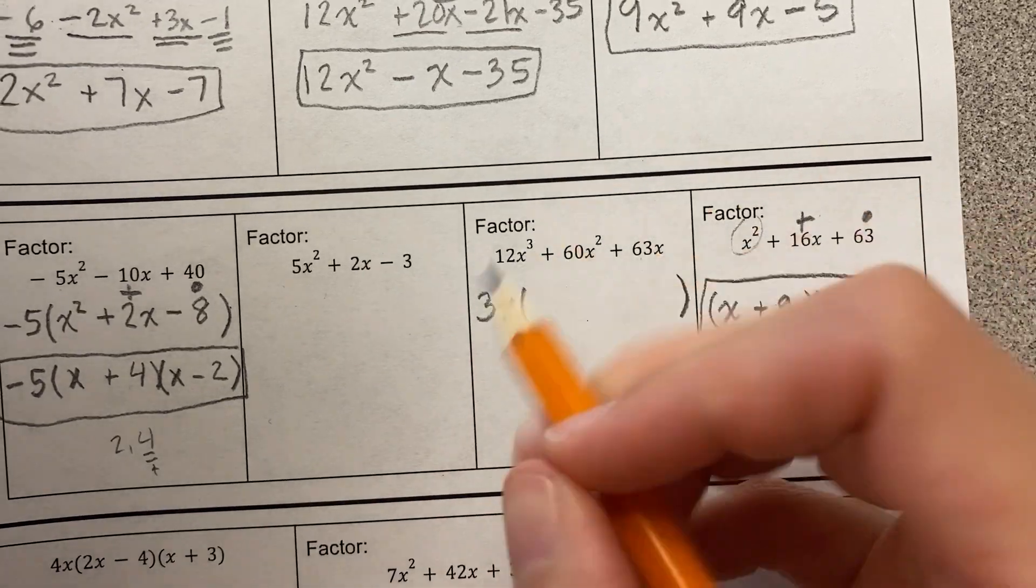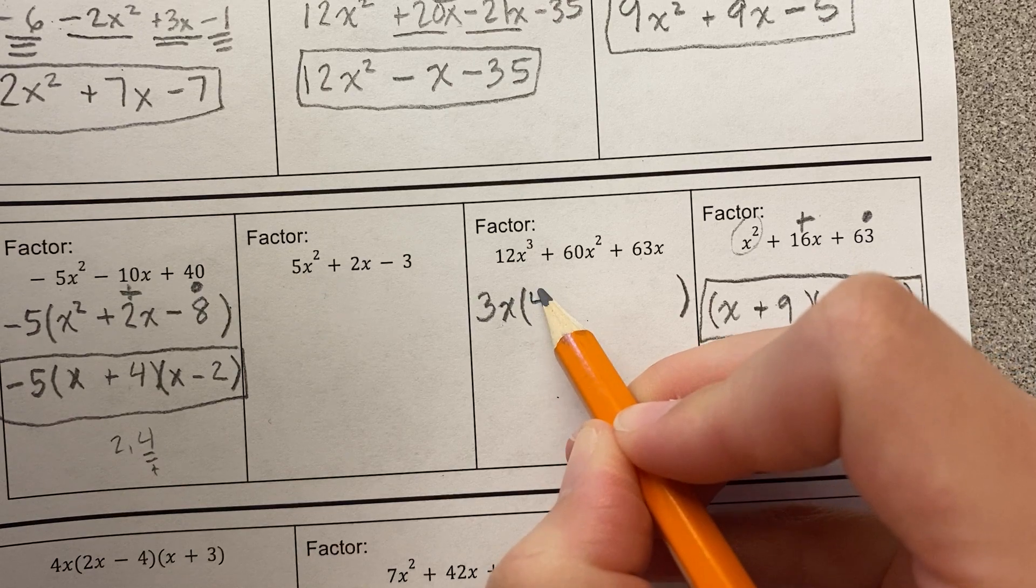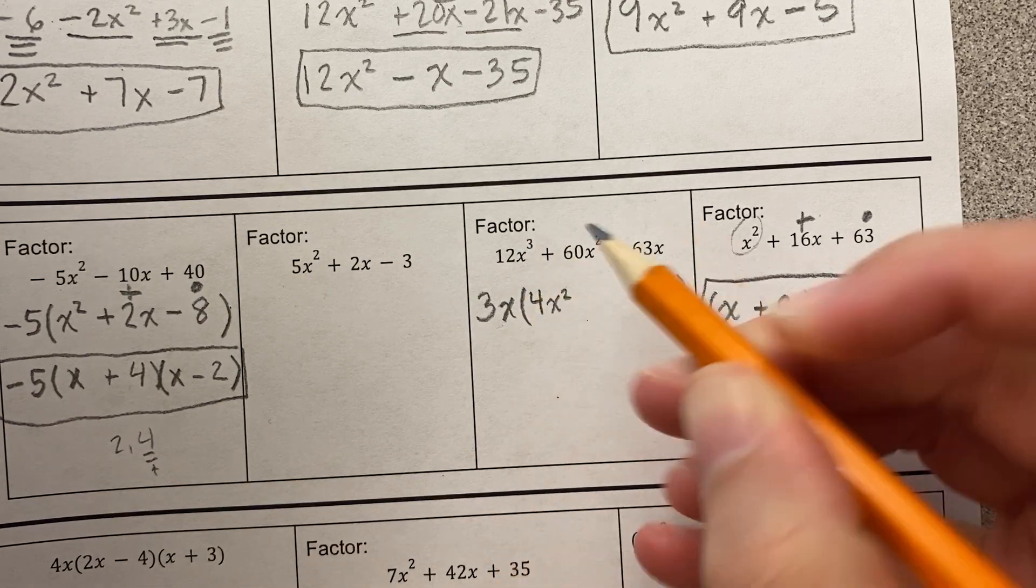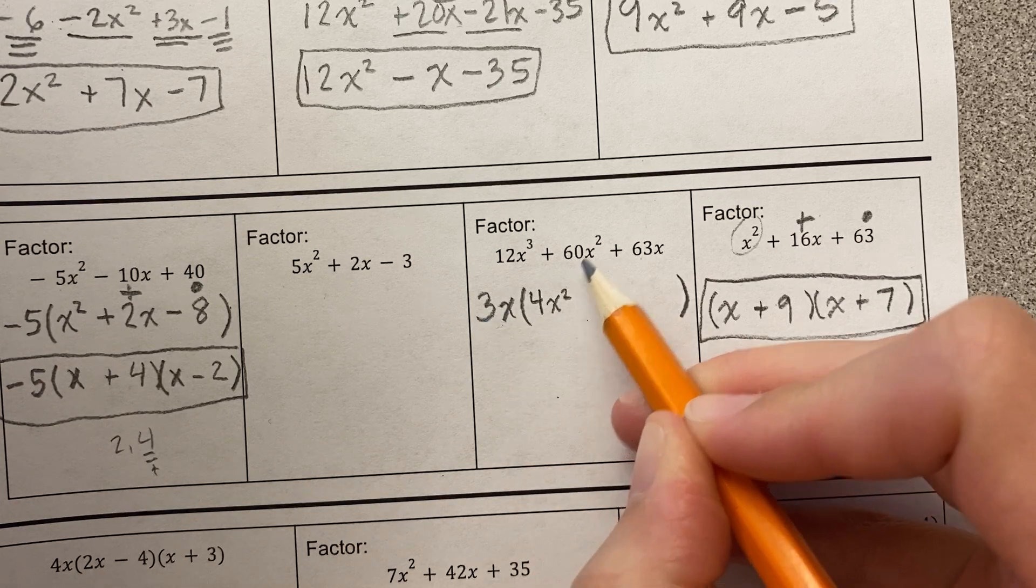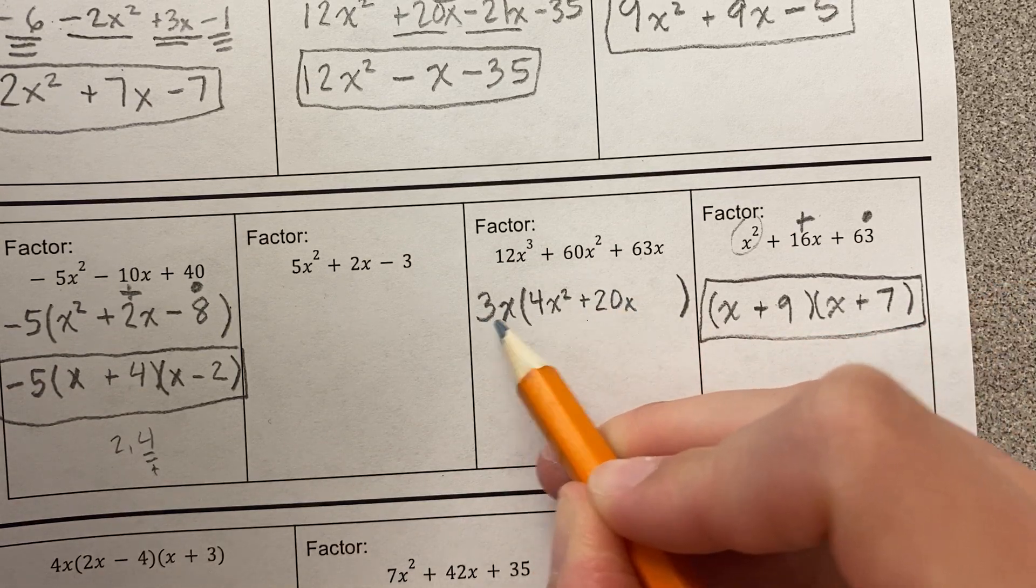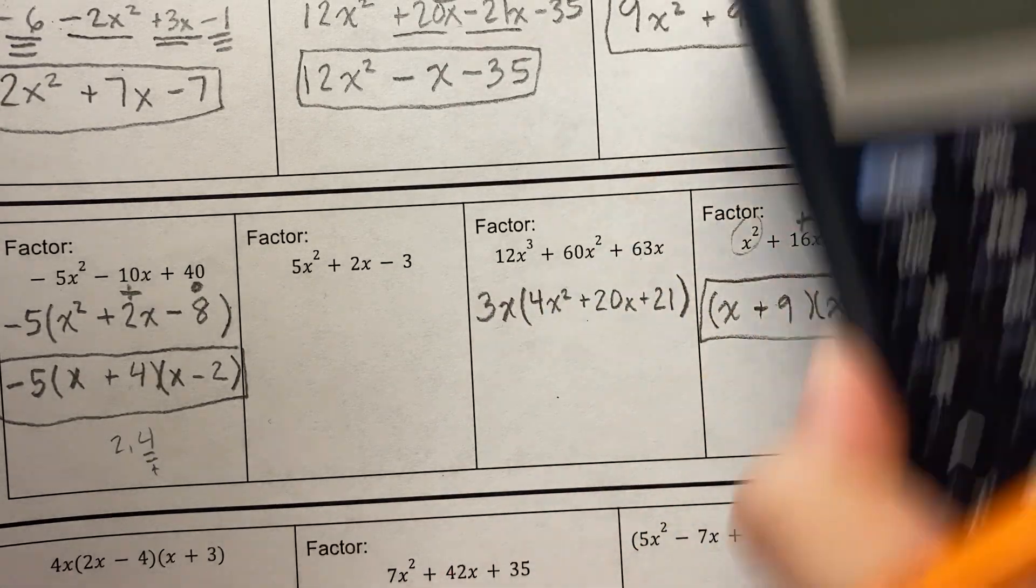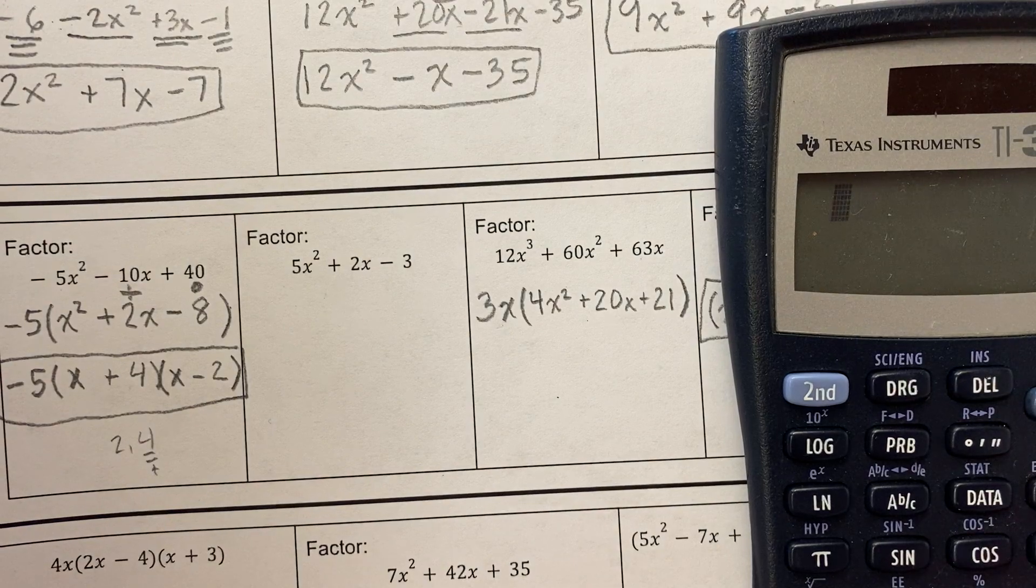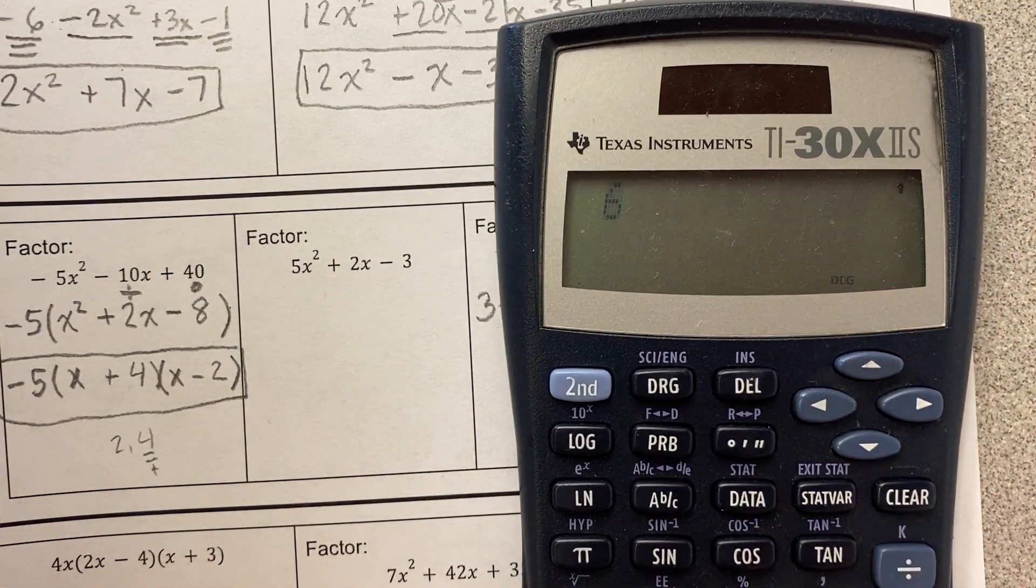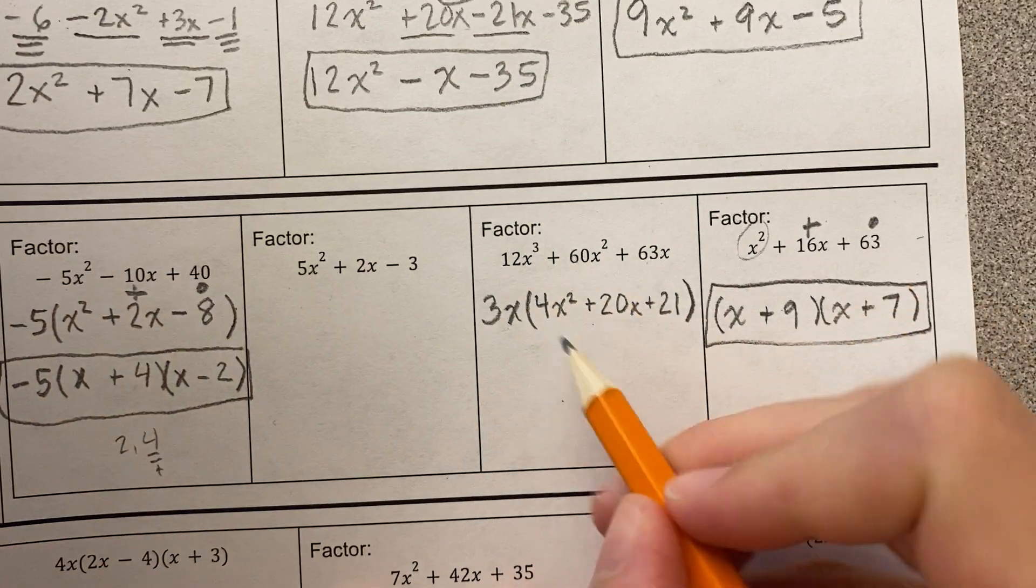Let's take out the GCF here. 3x times what is 12x to the third? Let's see, 3 times 4 is 12, and x times two more x's would get me three x's total. 3x times what would be 60x squared? That would be 20x, and 3x times 21. If I'm like, oh, I'm not sure, you can always do this. If I'm like, oh, 3x times what is 63? Look, you do 63 divided by three. Oh, it's 21.